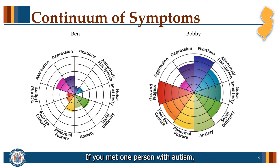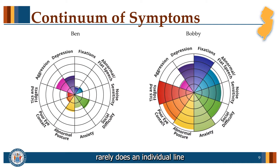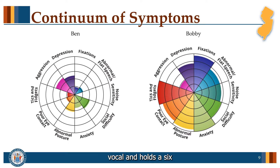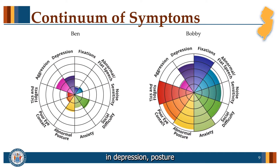The common phrase, 'if you've met one person with autism, you've met one person with autism,' is quite true. Every person is different and can be anywhere on the continuum of each particular area. For example, take Bobby on the right: he has an IQ of less than 70, is minimally vocal, and lives in community housing, with symptoms presenting more severely in all areas except aggression. Now take Ben on the left: he has an IQ over 130, is completely vocal, holds a six-figure job, and lives alone, but is higher on the continuum for aggression. Both individuals share difficulties in depression, posture, and social difficulty. No two people with autism are the same.